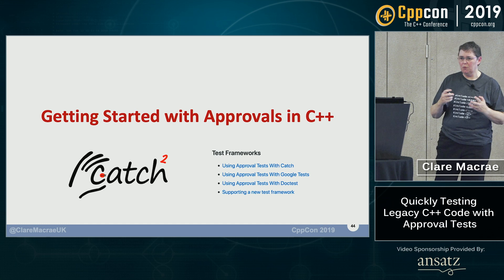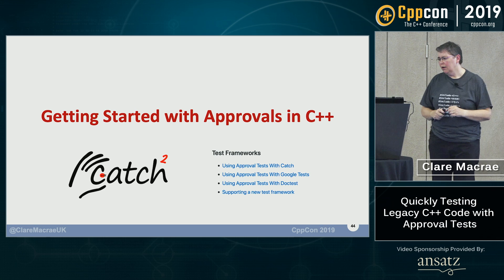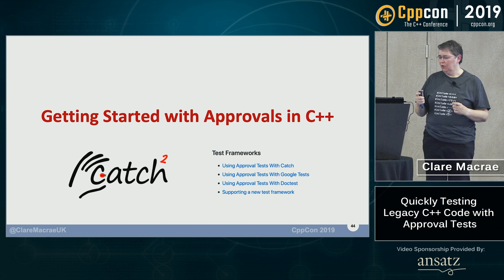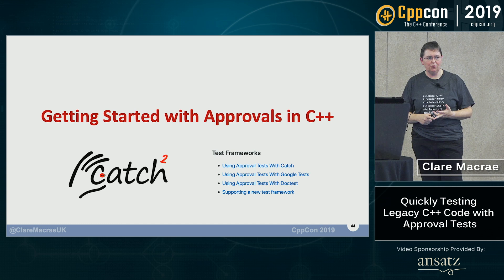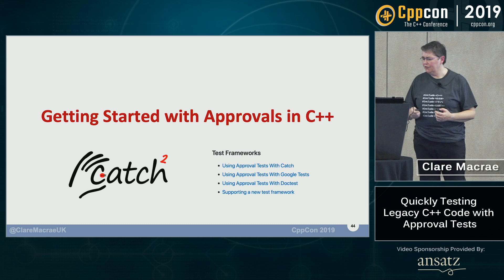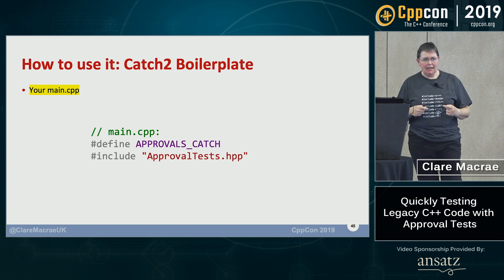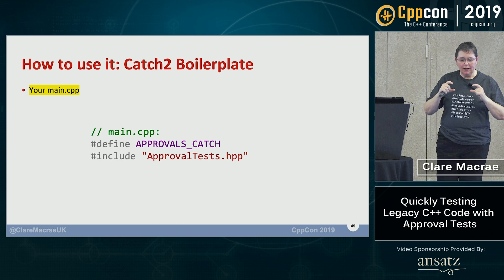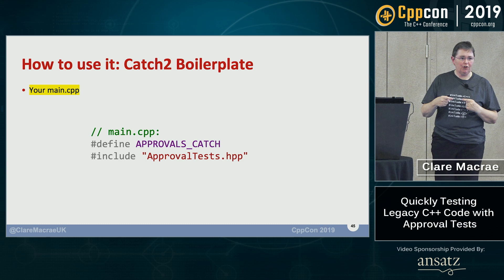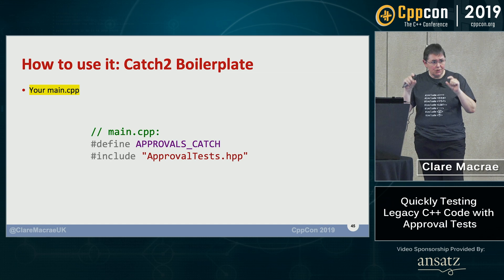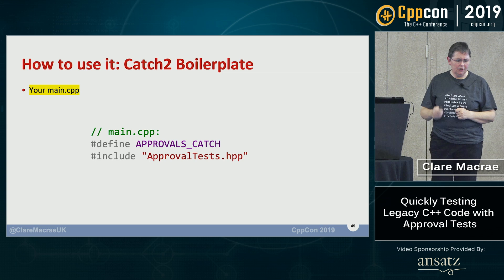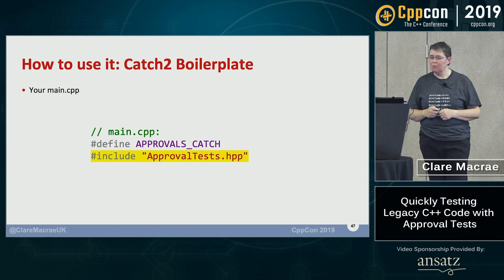I'll now walk through some code examples for a simple beginning-to-end workflow using Catch. The code is virtually identical between Catch, Doctest, and Google Test, so I've just picked one. The first thing you need is a main — you need to make sure it compiles the code needed for Approval Tests to understand what test framework you're using. In your main.cpp, you just need two lines: `#define APPROVALS_CATCH` and `#include` whatever you called the Approval Tests header.